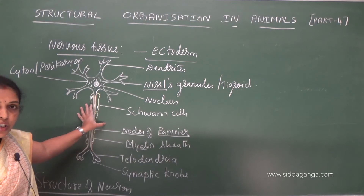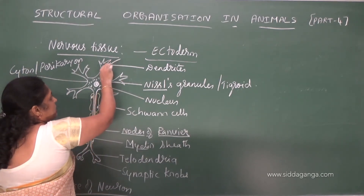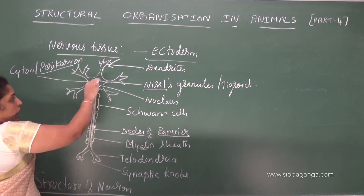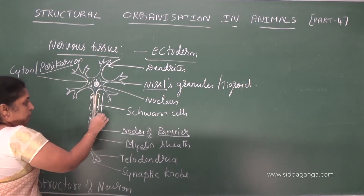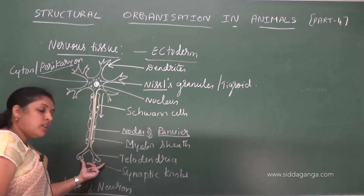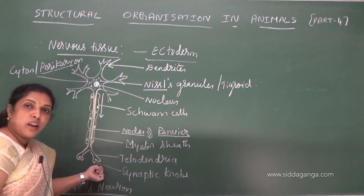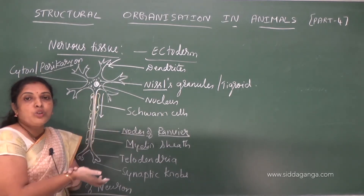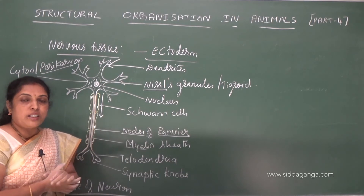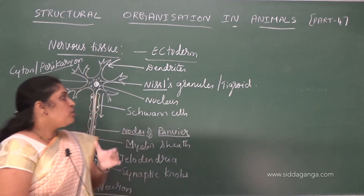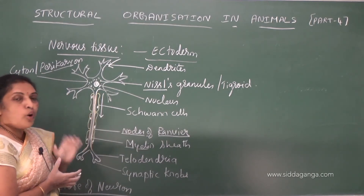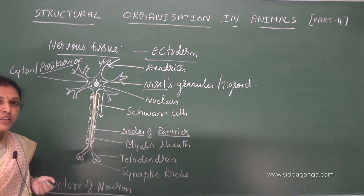The cell body is also called the perikaryon. Dendrites carry messages towards the cell body, and the message is taken away from the cell body through the axon. From the axon, the stimulus is transferred to the synaptic knob, and through the synaptic knob it is transmitted to the next neuron's dendrites via neurotransmitters. The diagram of a neuron is important — you may be asked to draw and label it for 5 marks.